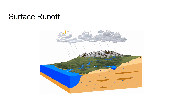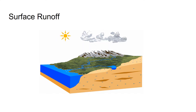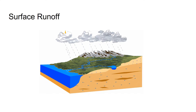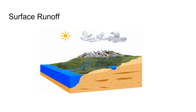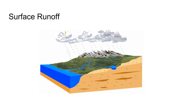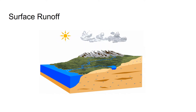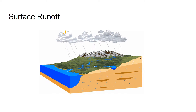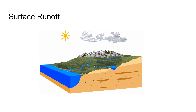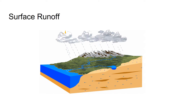Runoff can be described as the part of the water cycle that flows over land as surface water instead of being absorbed into groundwater or evaporating. Runoff is that part of the precipitation, snow melt, or irrigation water that appears in uncontrolled surface streams, rivers, drains, or sewers.